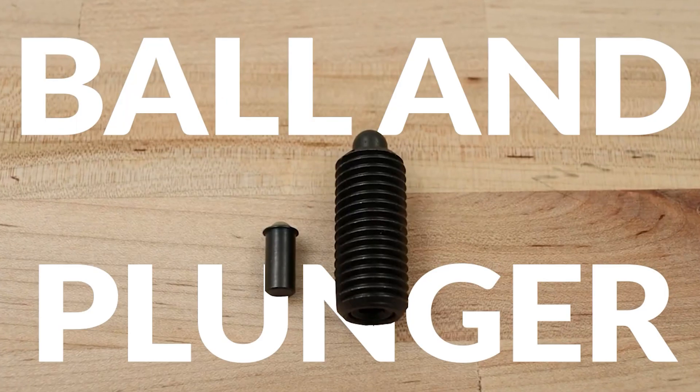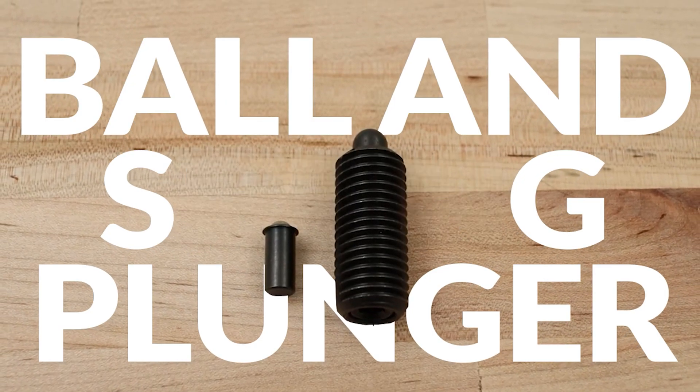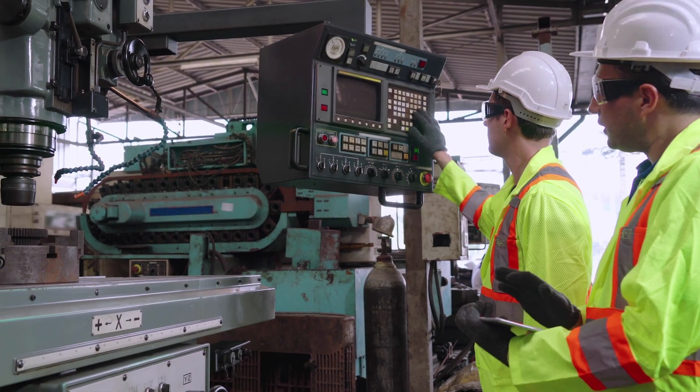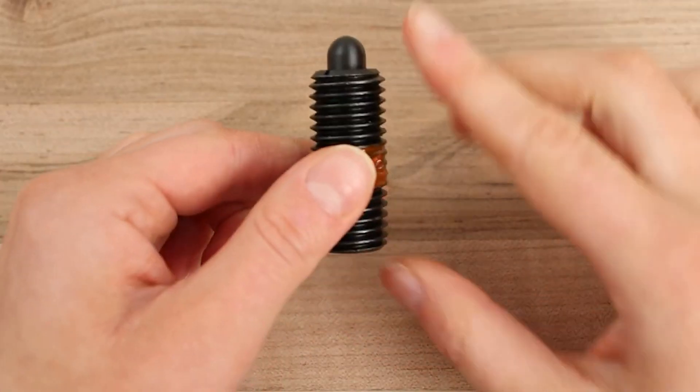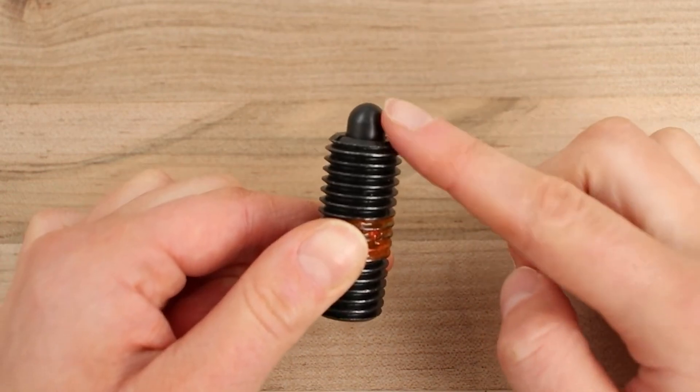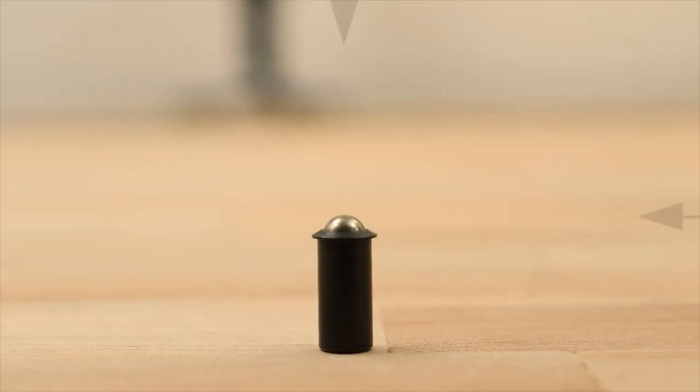Ball and spring plungers are another type that are typically used for positioning, indexing, and locking components into place. These also have a cylindrical body with a ball mechanism that provides a detent force, which holds the plunger in a retracted or extended position.